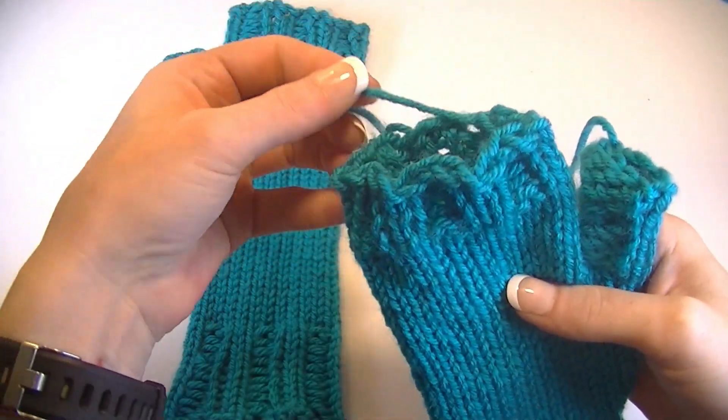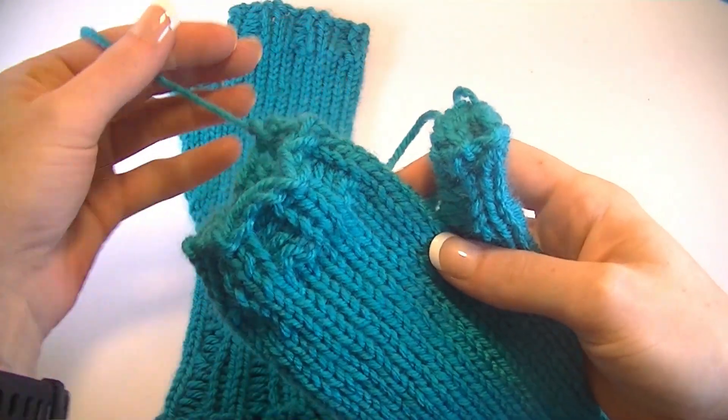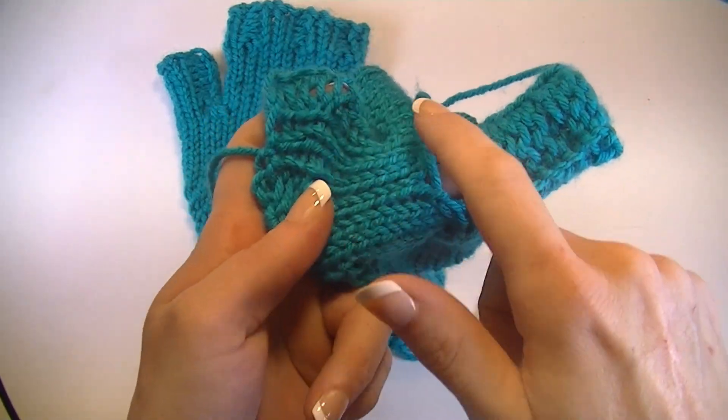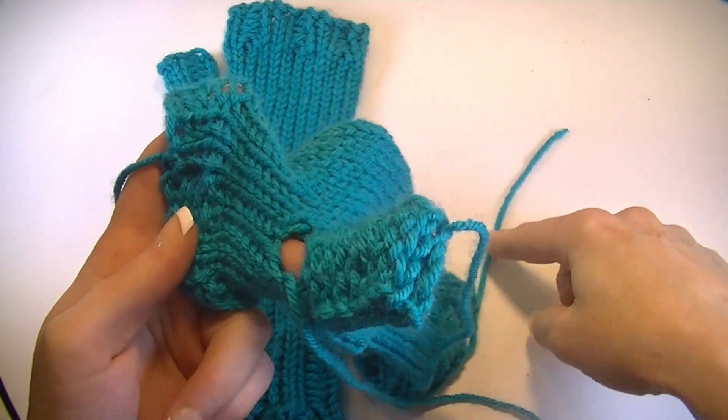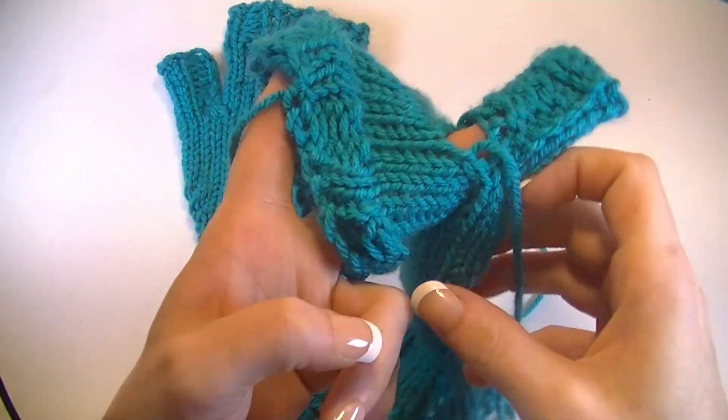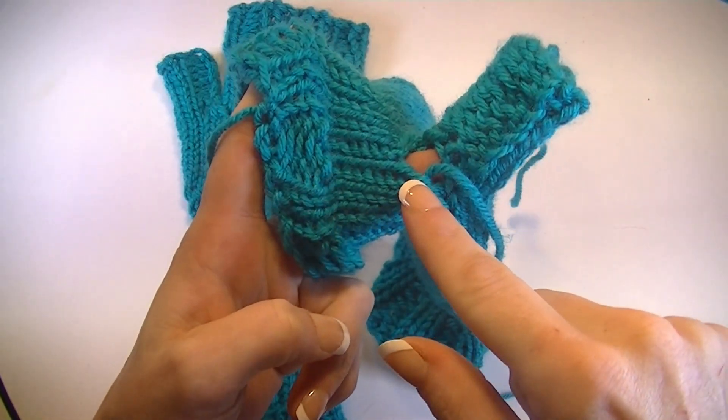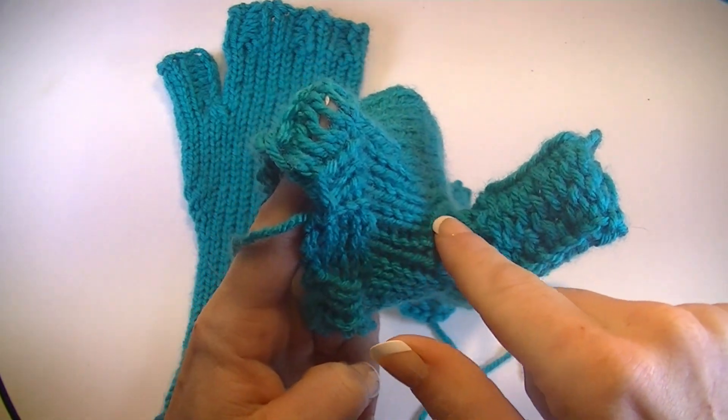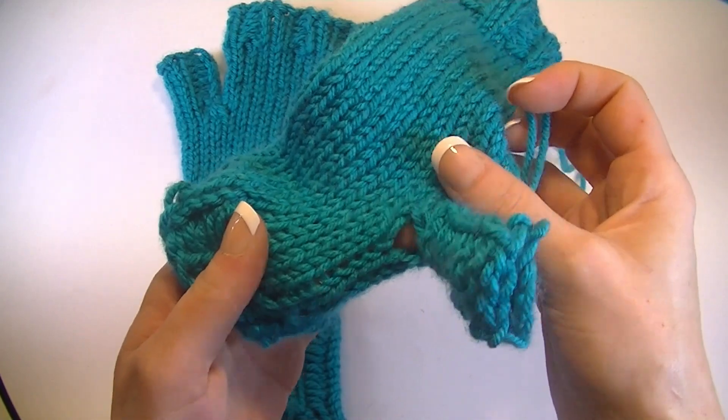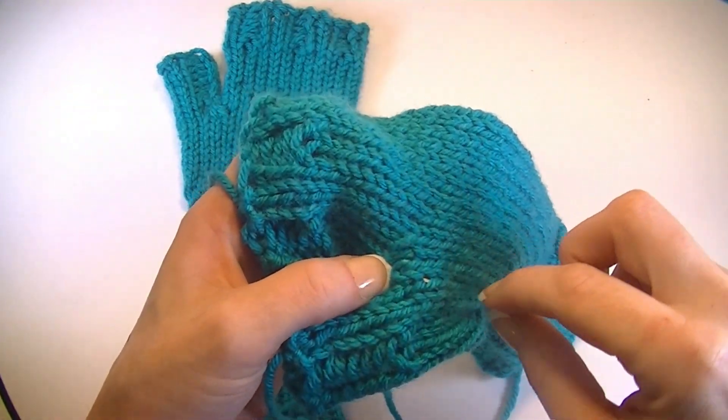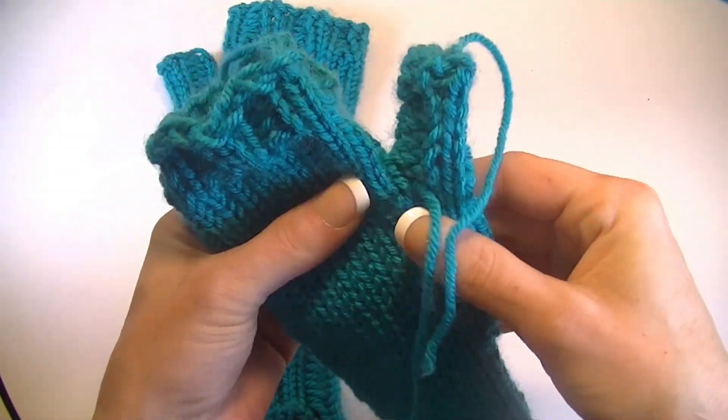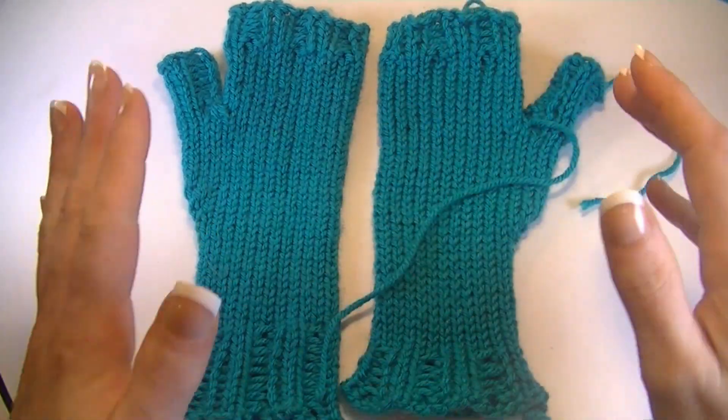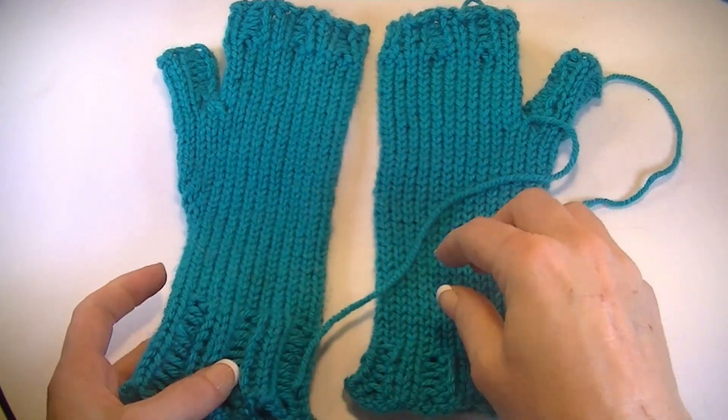At this point just weave the ends in. There'll be four: one at the bottom, one at the top, the top of the thumb, and then the hole in between the thumb. All of these ones, you're basically just running them through to hide them. This one right here, I take a tapestry needle and thread it or you can use a crochet hook and I just kind of weave it back and forth and tighten it up to where the hole closes up. And then I'll just kind of run it through some of the stitches in the back. You run it down a few stitches and it won't come out.